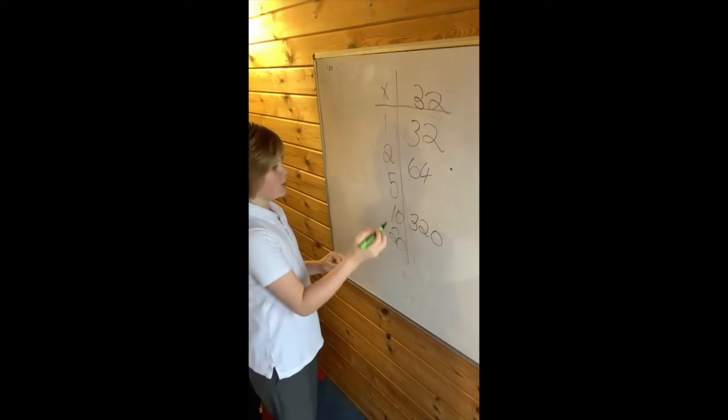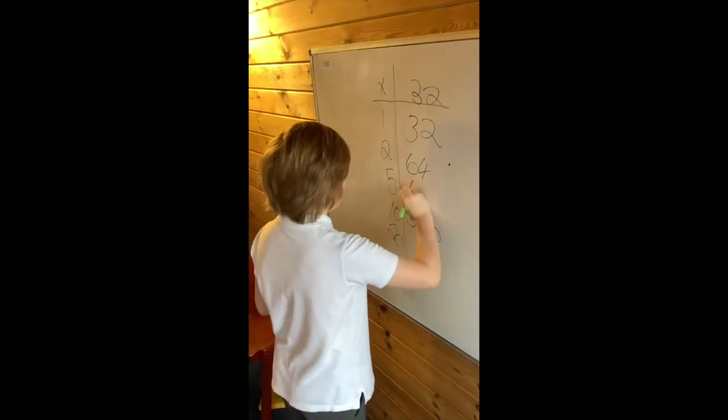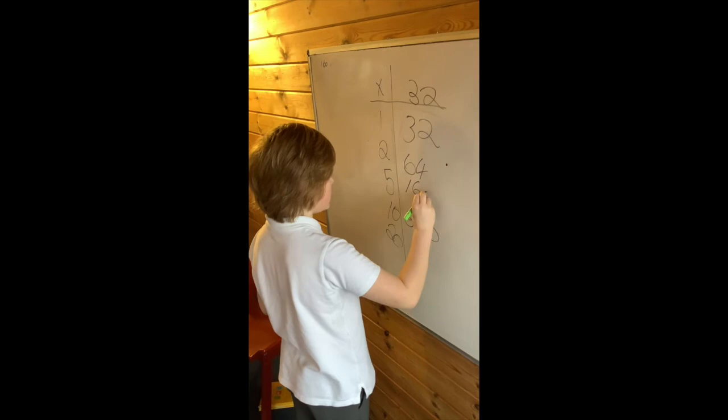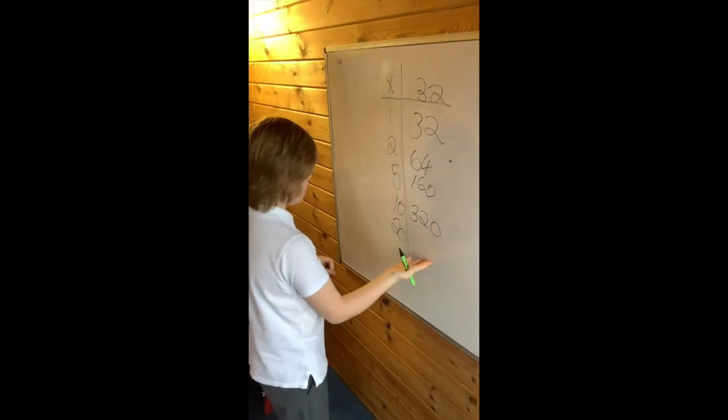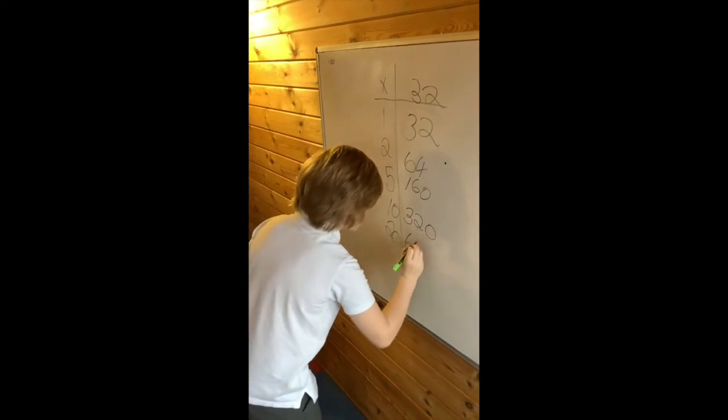Then you're going to split that in half, which would be 160. Then you want to double that number to make multiple 20, which would be 640.